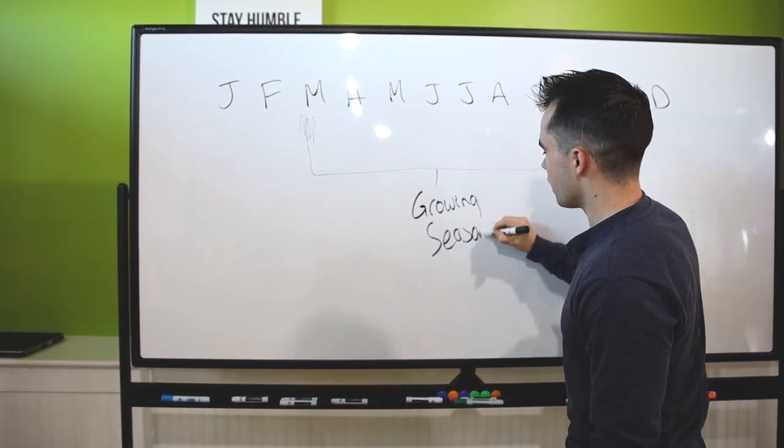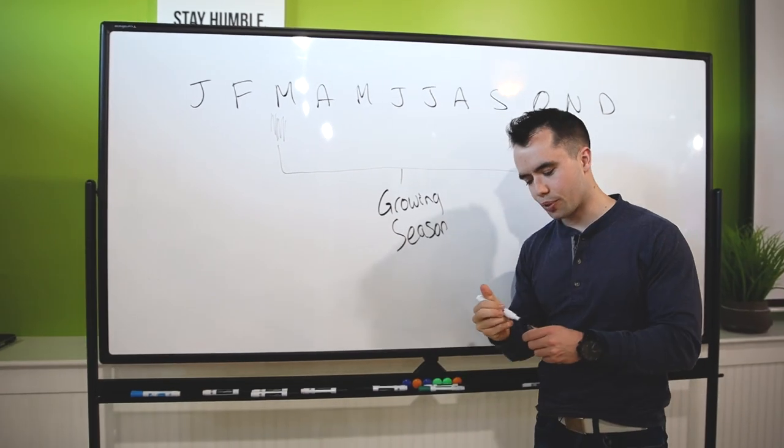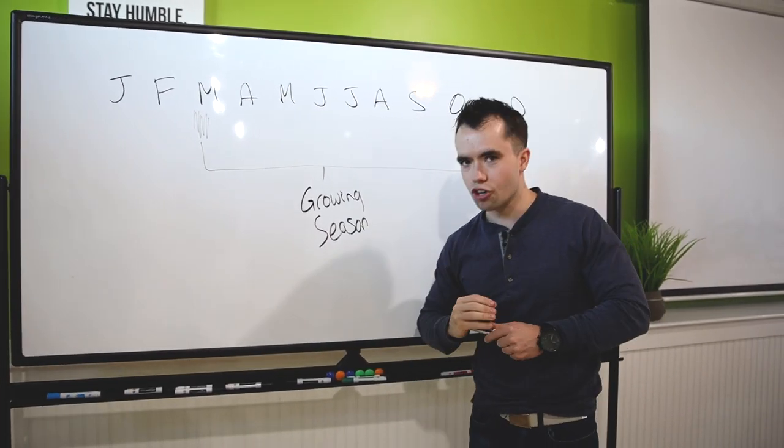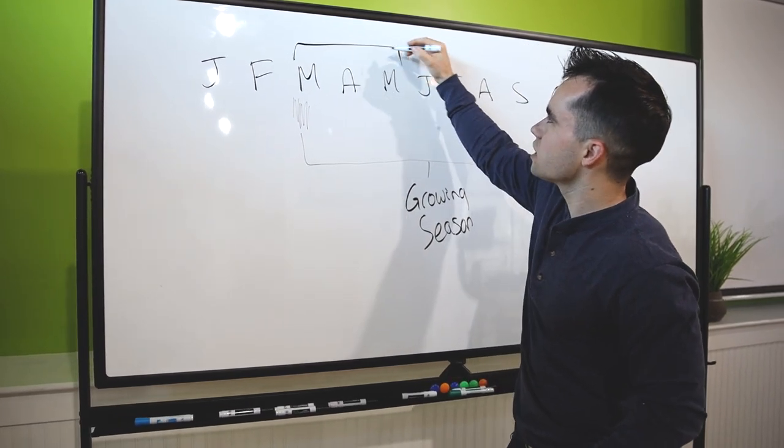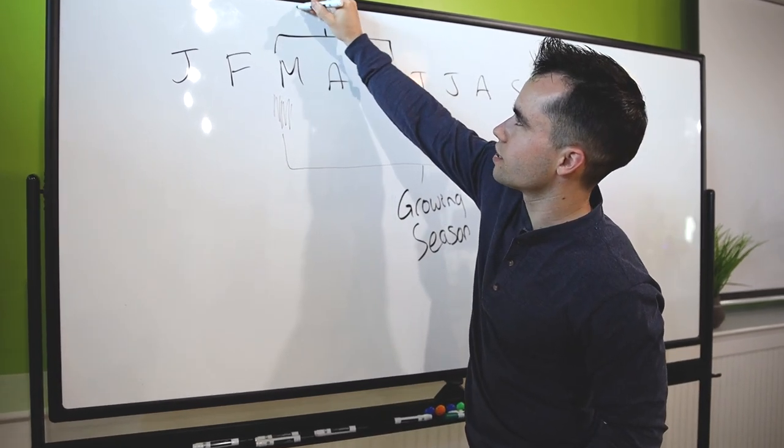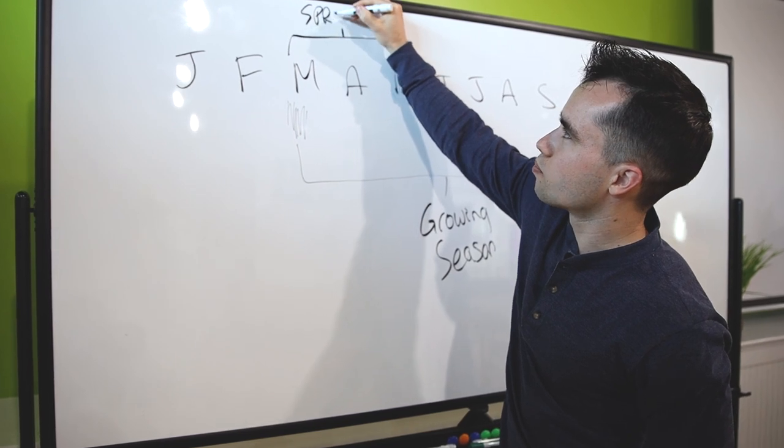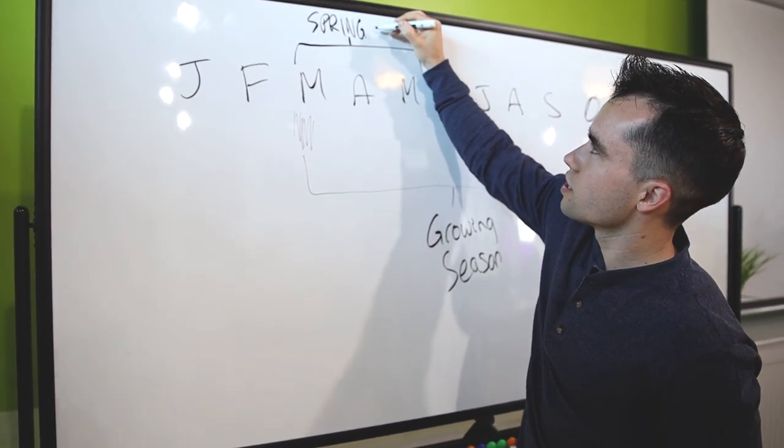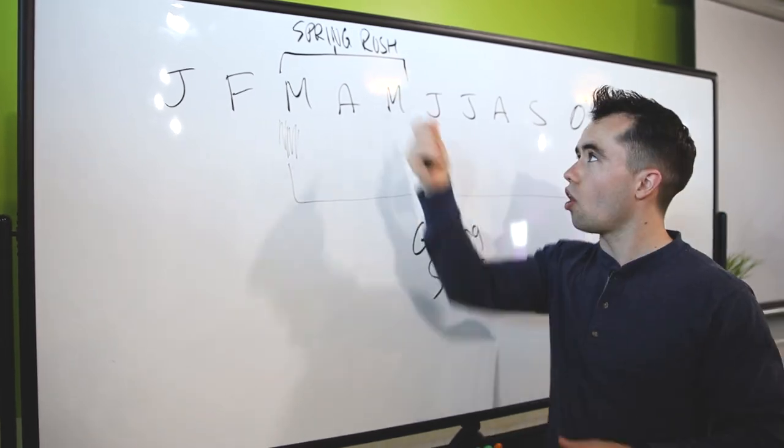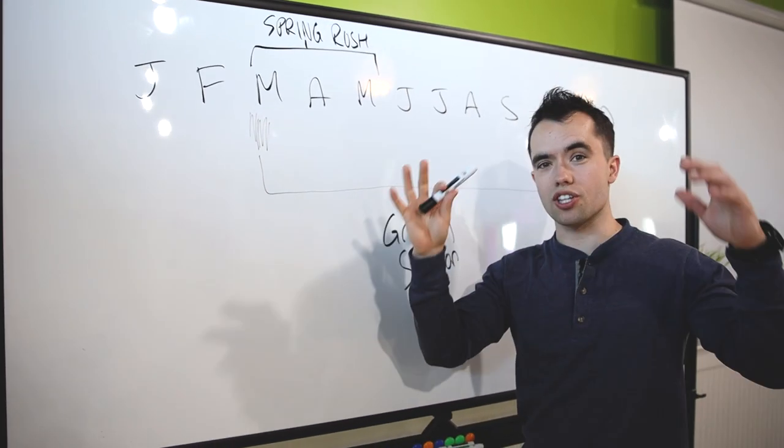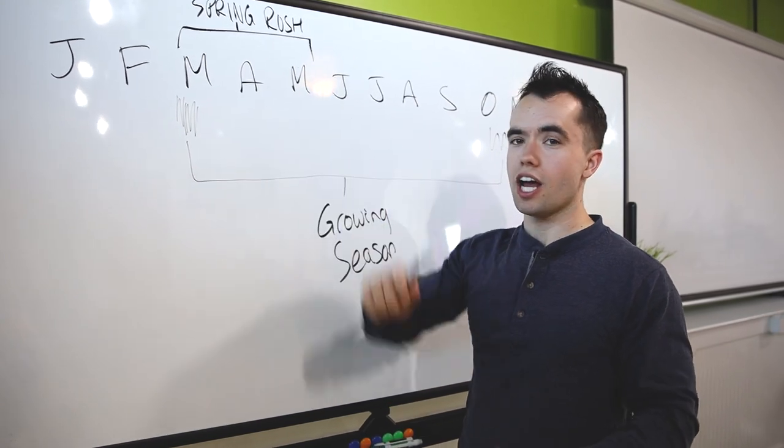This is the thing: we're going to charge the customer the same amount per cut, but guess what? The lawn is not growing at the same rate. During these months here, the grass is going to be growing much, much faster. This is what we call the spring rush, because not only is the grass growing faster, but that's when people call the most. That's when customers are wanting service the most. This is where we're at right now, and you are overwhelmed with work.